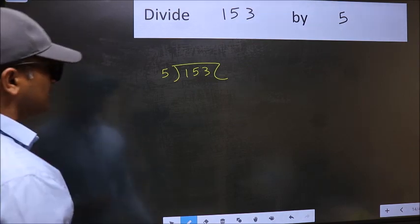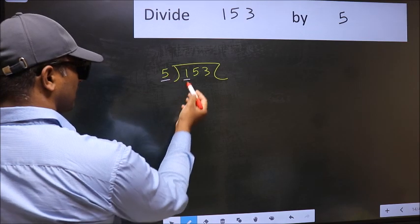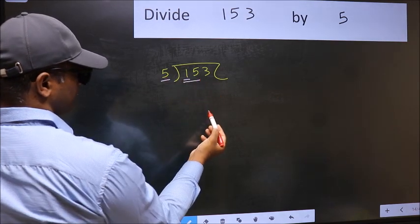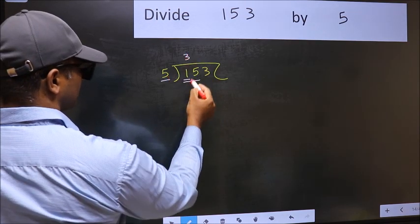Next, here we have 1 and here 5. 1 is smaller than 5, so take 2 numbers: 15. When do we get 15 in the 5 table? 5 times 3 is 15.